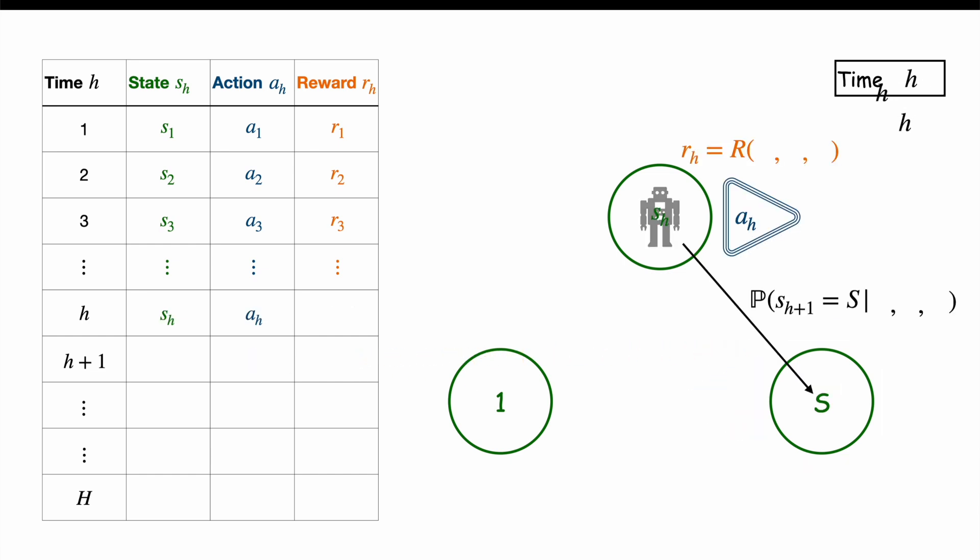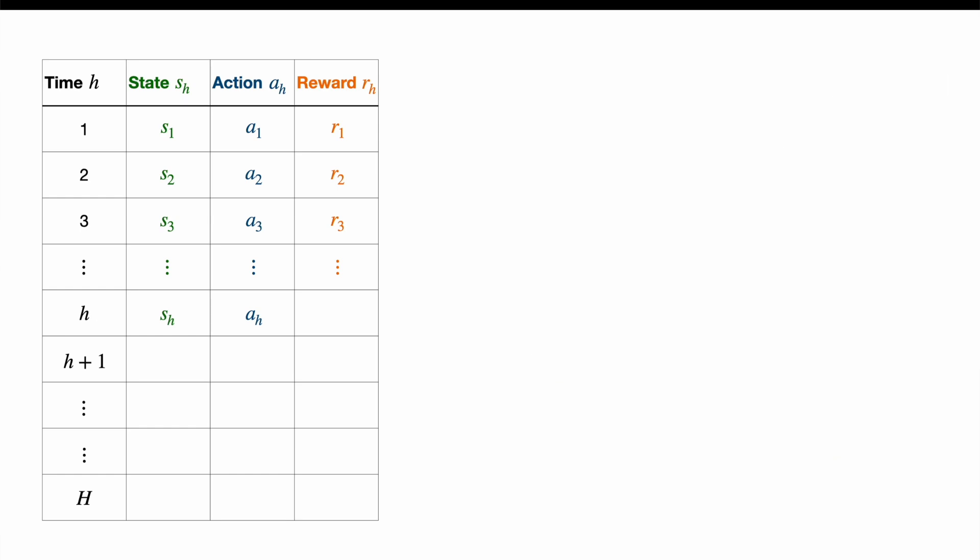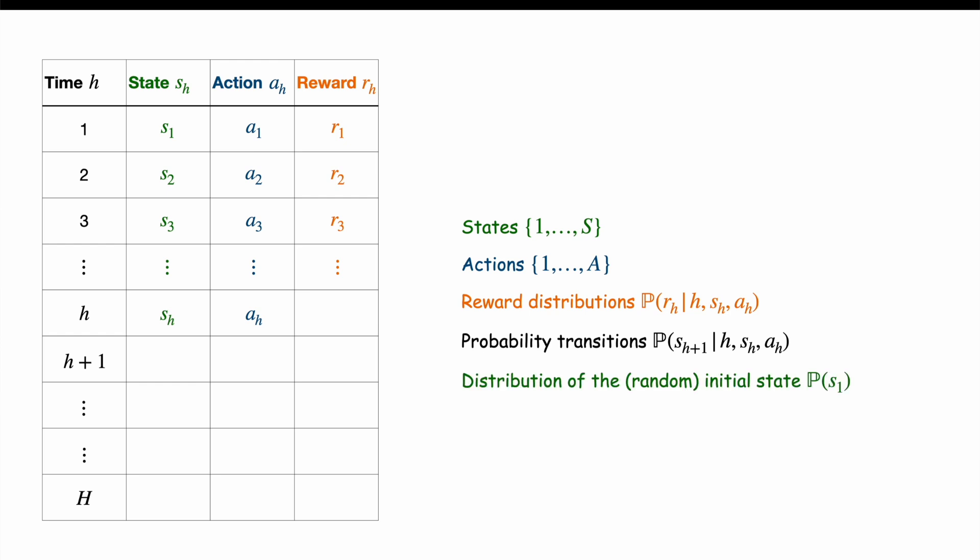Importantly, the reward and the next state depend on the current time H, the current state SH, and the current action AH. The model which captures all that, the states, the actions, the reward distribution, the probability transitions, and the potentially random initial state is called a Markov decision process or MDP.